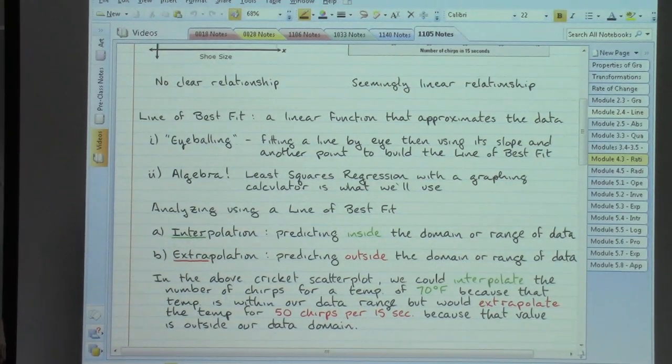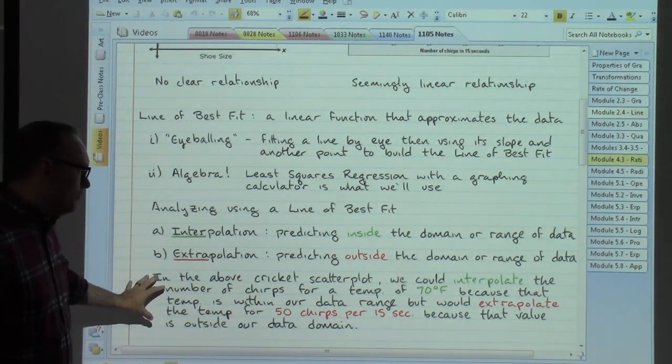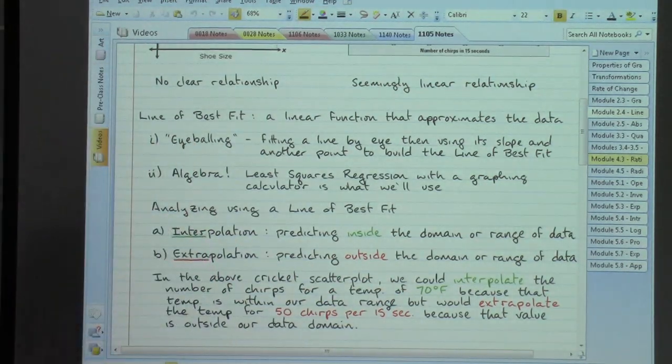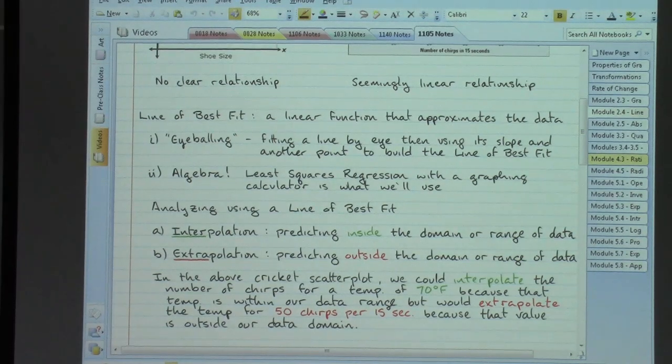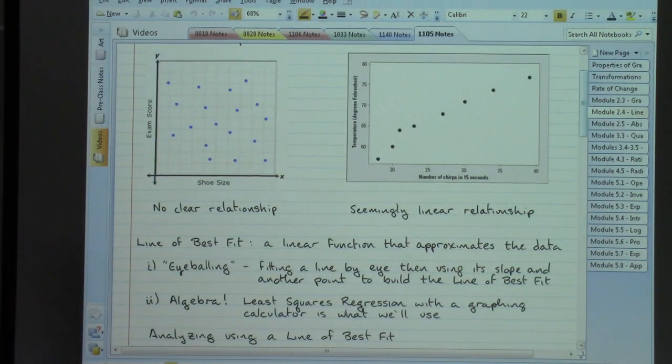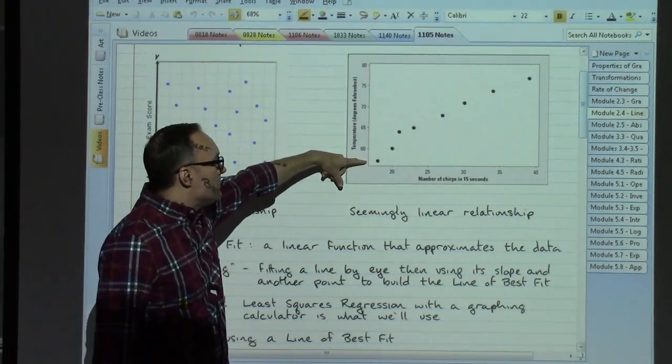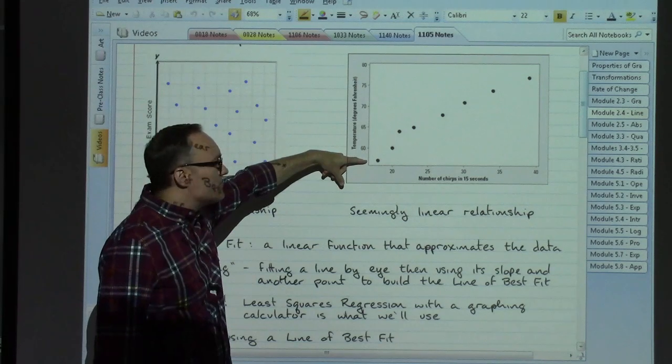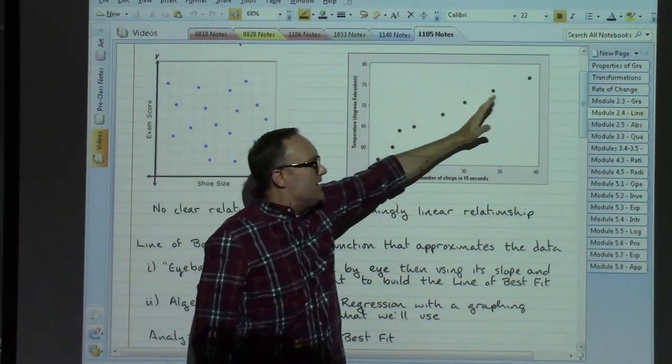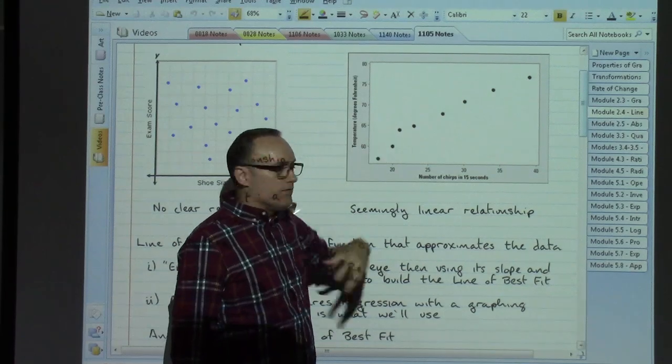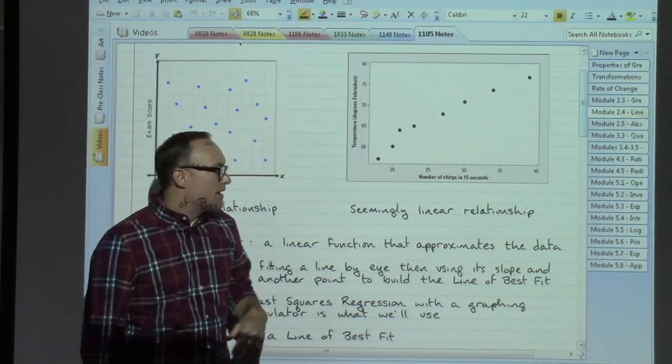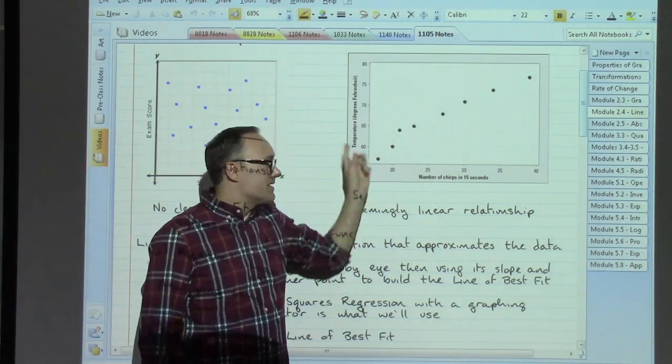If we're looking back at that graph, in the cricket scatterplot, we could interpolate the number of chirps for a temperature of 70 degrees. If we backtrack to that drawing and say, where's the 70 degrees? The lowest temperature that we're looking at seems to be right about maybe 57, 56 degrees. The highest temperature we're looking at, 75, 76, somewhere in that neighborhood. 70 is smack in the range of our data values. Domain down here, range up here, right? Smack in the middle of that range. If we were talking about predicting how many chirps we might expect with that temperature being 70 degrees, that's interpolation.